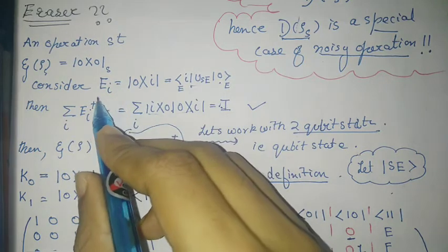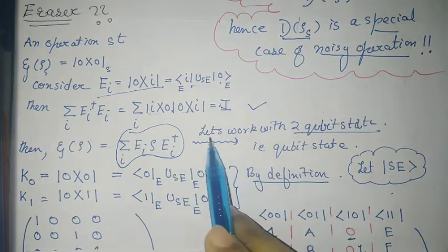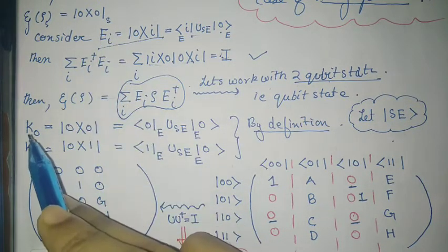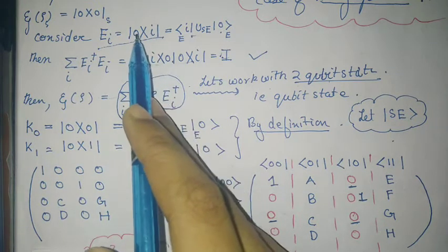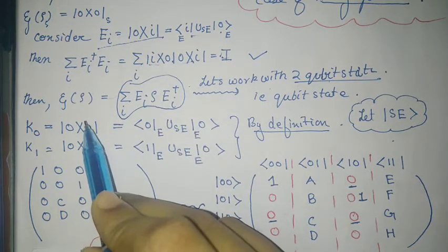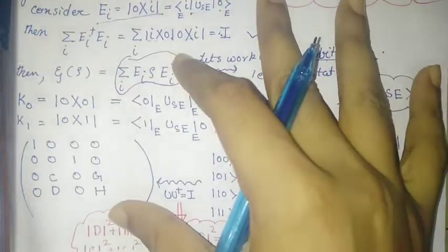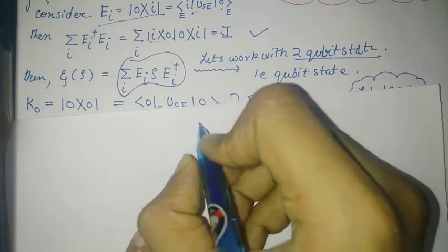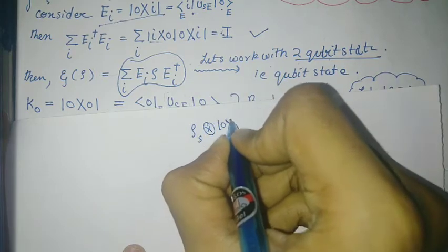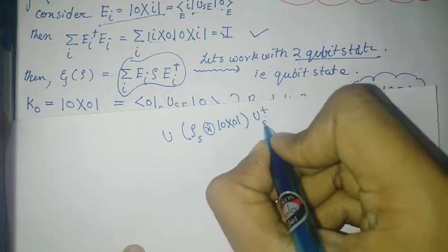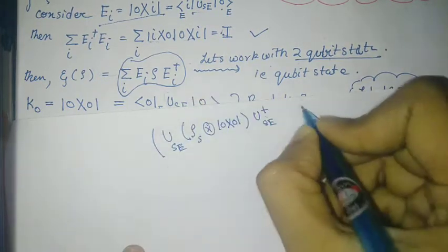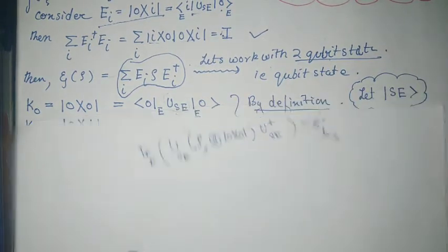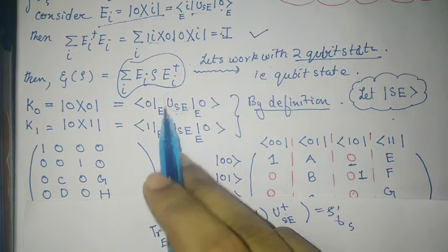Given this eraser function, the eraser operation is defined with Ei satisfying the completeness relation. Going to a two-qubit state: E0 corresponds to i=0 and E1 corresponds to i=1. Now the question is: how can we obtain the system-environment unitary? In the system-environment coupling picture, ρ_system couples with the environment, the whole thing evolves under a system-environment unitary, and then we trace out the environment to get the final system state ρ′.